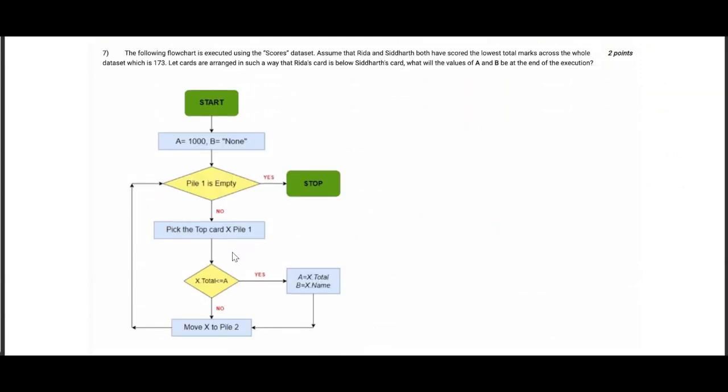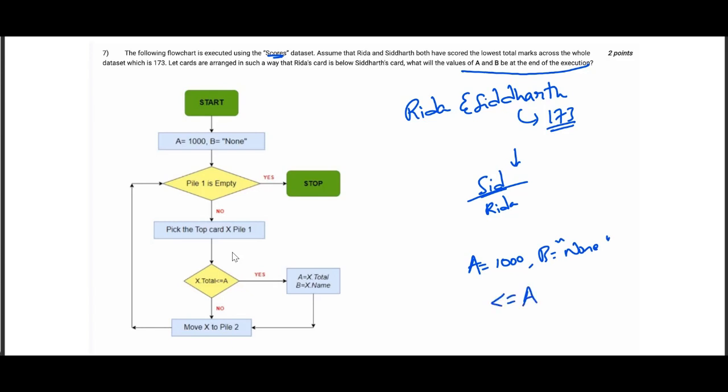Now, coming to question number seven. This is also using scores dataset. Rida and Siddharth both scored 173, which is the class least total. The cards are arranged in such a way that first card is Siddharth's card, and then comes Rida's card. This is the order. What is the values of A and B at the end of execution? So, it is 1000 initially. A is 1000, and B is NUM. This is the top card. If actual total less than equal to A—what you need to observe is less than or equal to A.